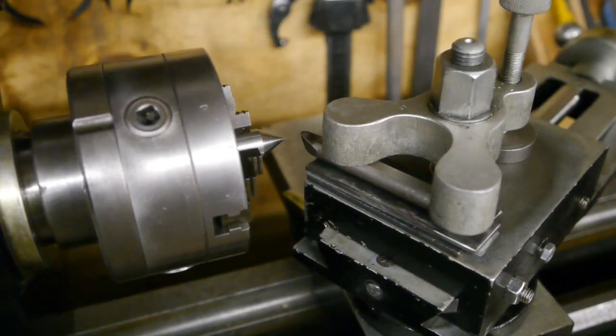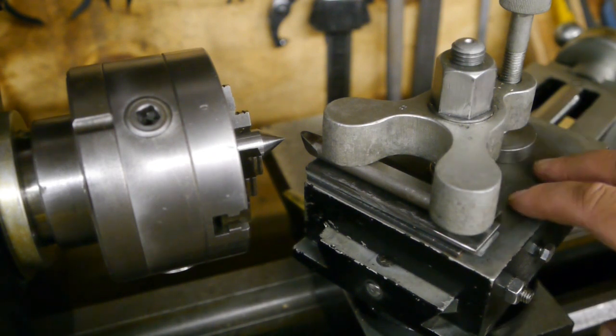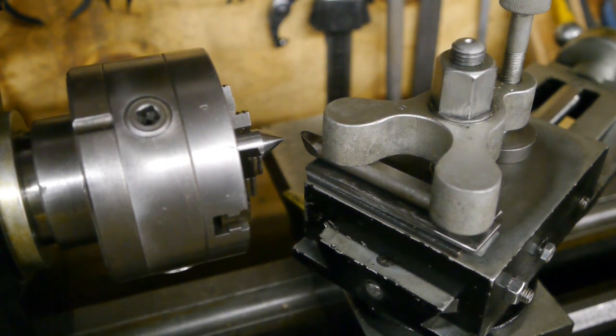Before I can install the indicator bar, I need to true up this pointy bit. I don't have a MT3 fixed center for this lathe. So I'm using a piece of stock with a point on it. It's probably more accurate anyway. Although setting up the top slide for a 30 degree angle is a bit hard with the bent protractor needle and a scale that only goes up to 26 degrees.